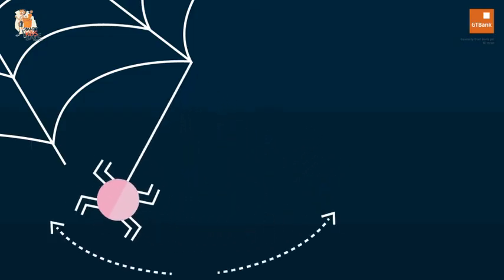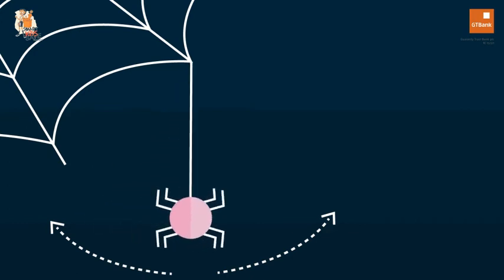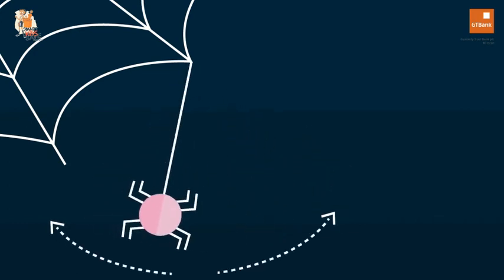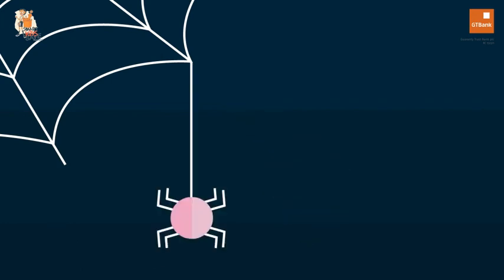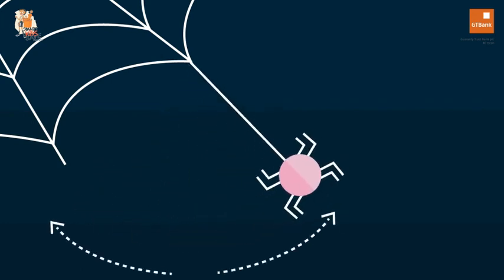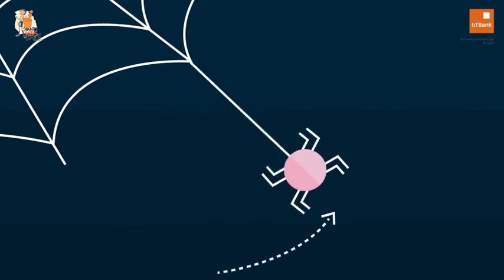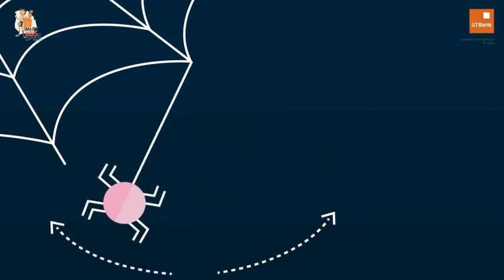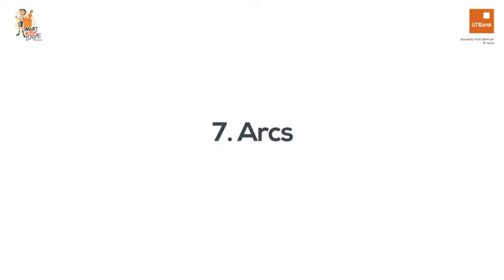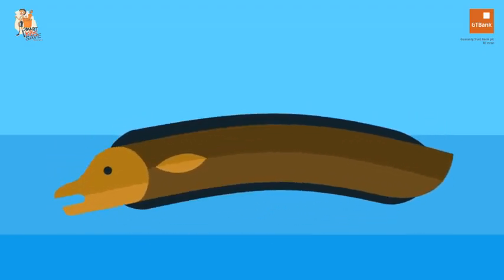Number six: slow in and slow out. This is the way an object accelerates and slows down during its movement. For example, when a pendulum — or in this case a spider — swings back and forth, it picks up speed on its way down but slows down on its way back up again.